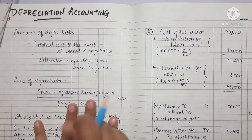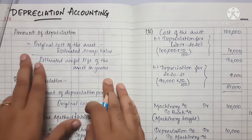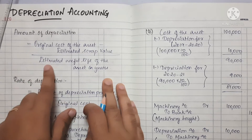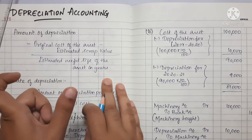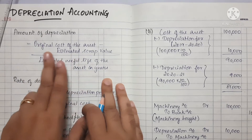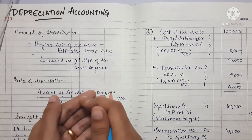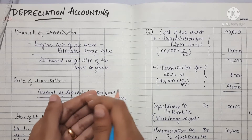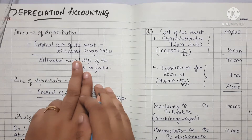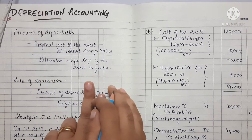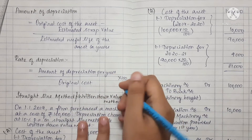First we will talk about the formula for depreciation — whether it's 2 marks or 3 marks. To calculate the amount of depreciation, the formula is: Original Cost of Assets plus installation charges and carriage freight charges, minus Estimated Scrap Value, divided by Estimated Useful Life of Assets in years. This is the first formula.